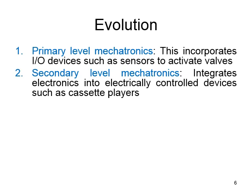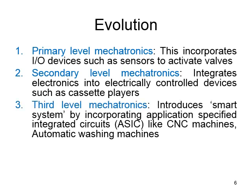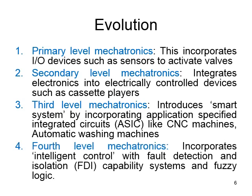In third level mechatronics, smart systems — that is, application-specific integrated circuits — such as CNC machines and automatic washing machines come under this level. Things become more and more automated at this stage. In fourth level mechatronics, it incorporates intelligent control and FDI, which means fault detection and isolation, using the concept of fuzzy logic. Even detection of faults is incorporated at this level.